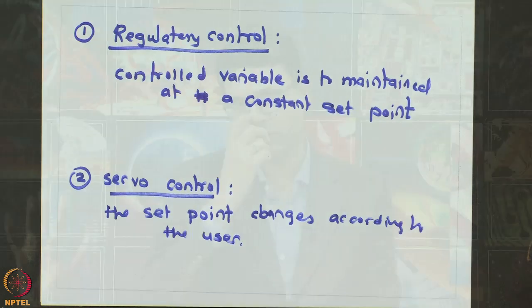This is the case where either your market conditions dictate that you should operate at a different value or the reaction chemistry has changed because the catalyst has degraded and you want to operate the reactor at a slightly different temperature. Whenever there is a change in the desired value of the control variable, those type of control problems will be known as servo control problems.